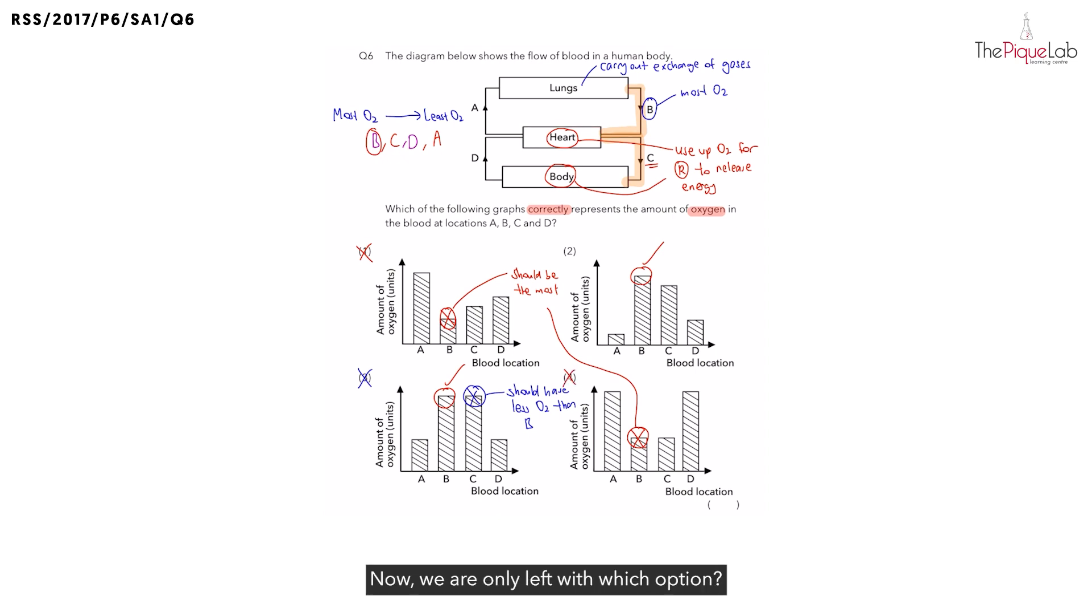Now, we are only left with which option? We are left with option two. So let's check. We know B has the most amount of oxygen followed by C and then D and then A. So is this what we should expect? Yes. So because of that, the correct answer has to be option two.